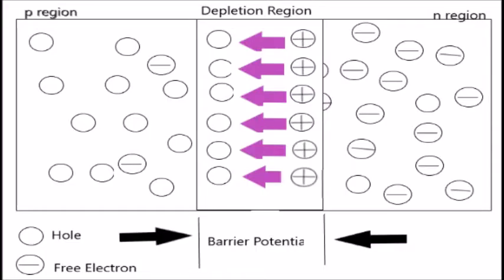The force between opposite charges forms a field of forces called the electric field. This electric field is a barrier to the free electrons in the N-region and requires more energy to move an electron through it. The potential difference of the electric field across the depletion region is the amount of voltage required to move the electrons through the electric field. This potential difference is called the barrier potential.